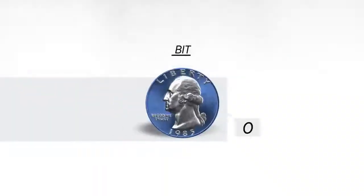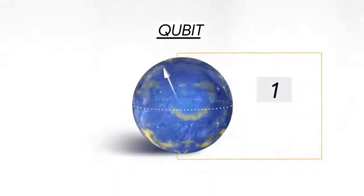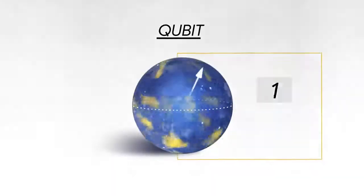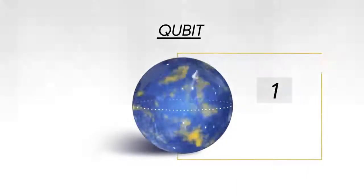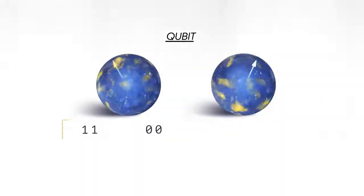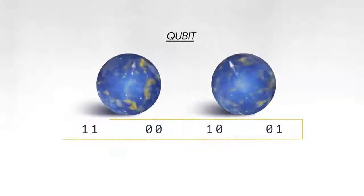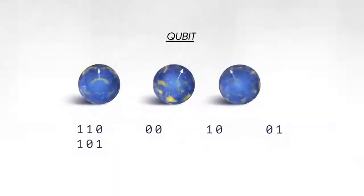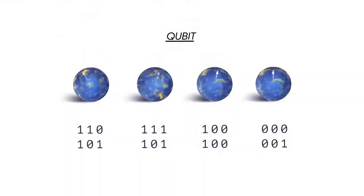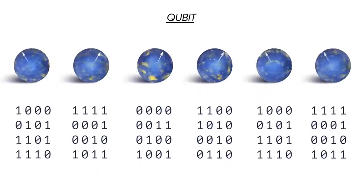The classical bit stores information as a zero or one, and a quantum bit can be both zero and one at the same time. If you have two quantum bits, then there are four possible states that you can put in superposition. With three qubits it's eight, four qubits it's 16 — it grows exponentially.